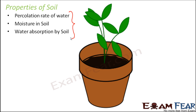Everything here is related to water because, from a plant's perspective, soil is important because of water. Plants need water for their survival and they get it from soil. Plants also need minerals and nutrients, which they get from the soil dissolved in water. So water is the link between plants and soil.